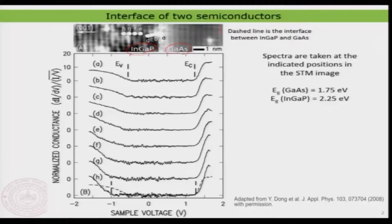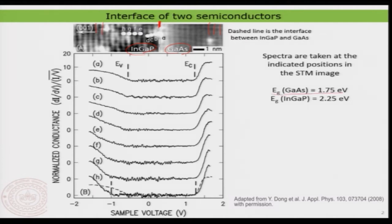What you are ideally seeing — these bright lines here are the gallium arsenide lattice, and in this region you are seeing the indium gallium phosphate lattice. Exactly at this point is the interface. In STM we can distinguish materials using spectroscopy because their electronic properties are slightly different. The electronic gap for gallium arsenide is 1.75 eV and for indium gallium phosphate it is 2.25 eV — about 500 milli-electron volt difference between their band gaps.